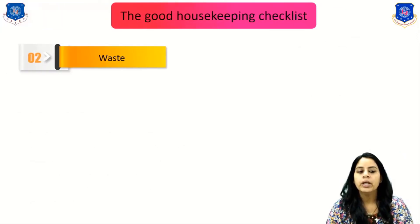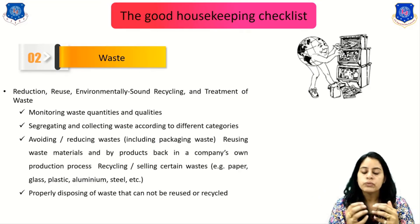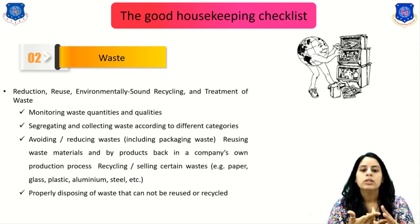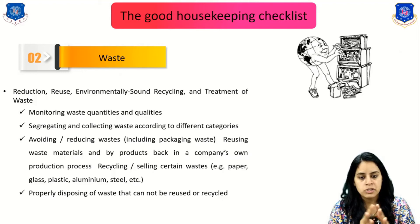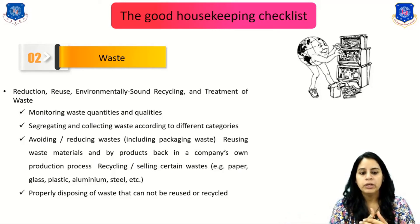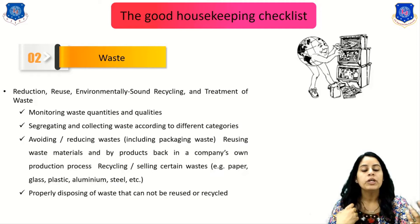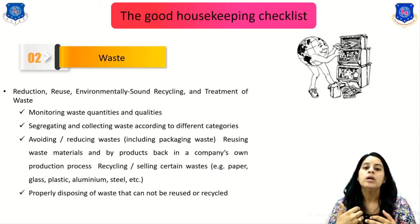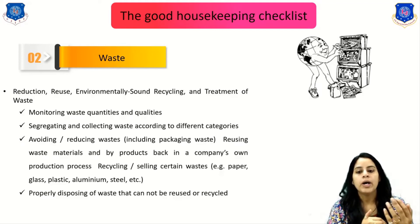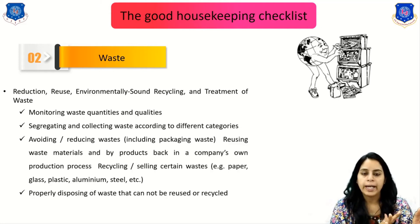The next checklist item is waste. In this process, the 4Rs are used: reduce, recycle, reuse, and recover. This involves monitoring waste quantities and quality, since some waste goes to recycling and some to reuse. Waste is segregated and collected according to different categories — for example, paper waste, glass waste, and so on.